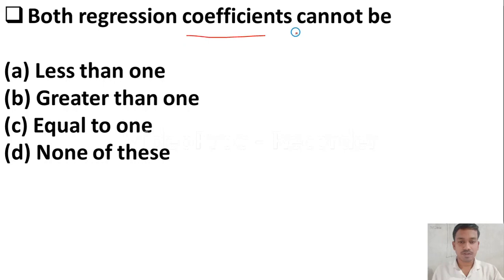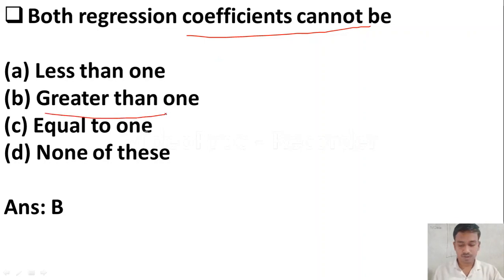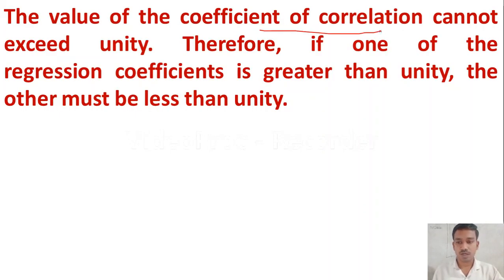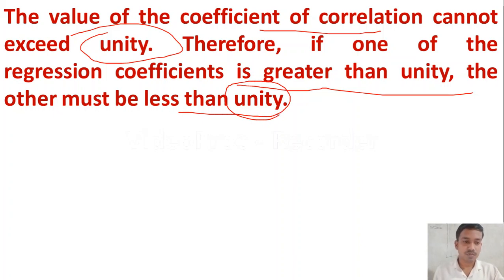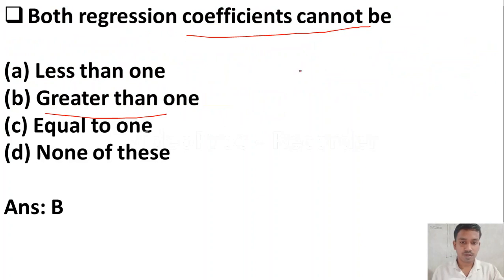The next question: both regression coefficients cannot be — option A less than 1, option B greater than 1, option C equal to 1, option D none of these. The right answer is option B, greater than 1. The value of the coefficient of correlation cannot exceed unity. If one regression coefficient is greater than unity, the other must be less than unity. So both regression coefficients cannot be greater than 1.